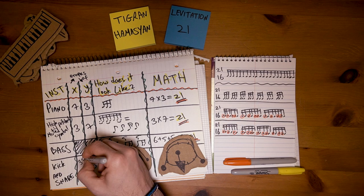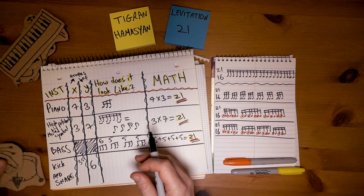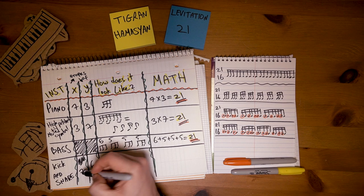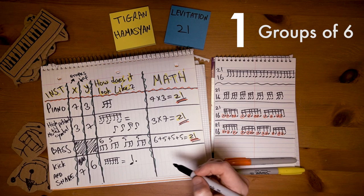But it does fit nicely into 42, which, besides being the meaning of life, is also 2 bars of 21. So we have 7 groups of 6, spanning over 2 bars of 21.